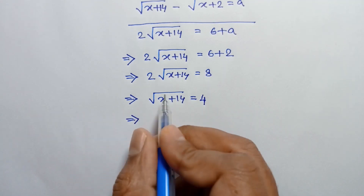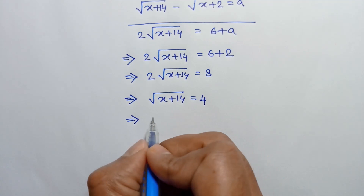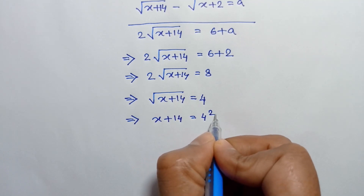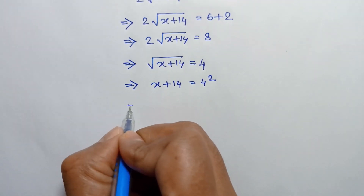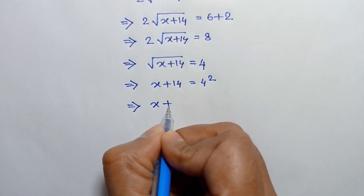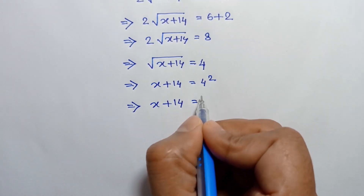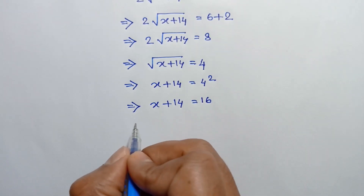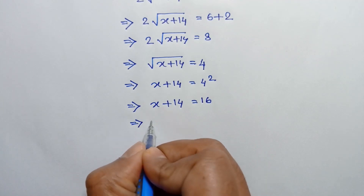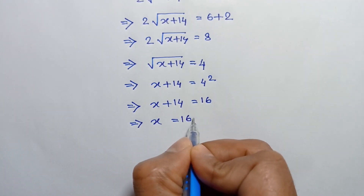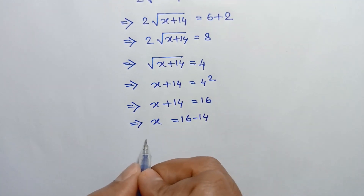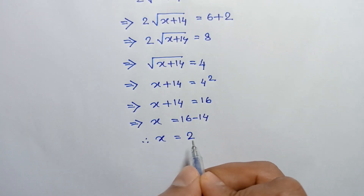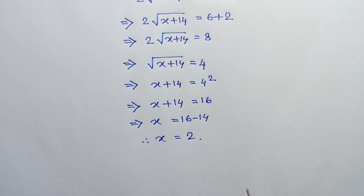Squaring both sides, x plus 14 is equal to 4 squared, which is 16. Taking 14 to the right side we get x is equal to 16 minus 14. So the value of x is equal to 2.